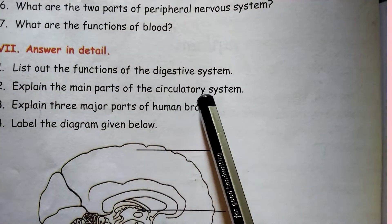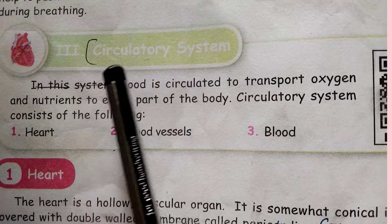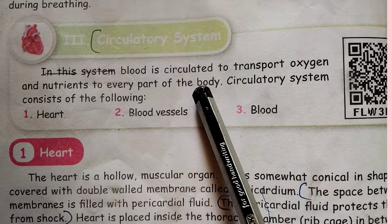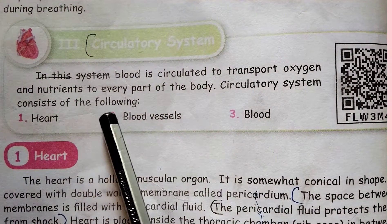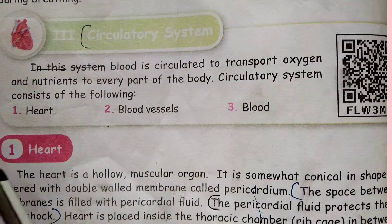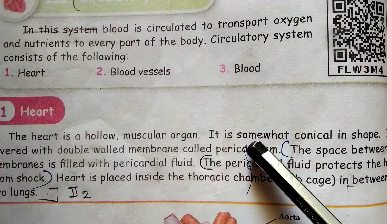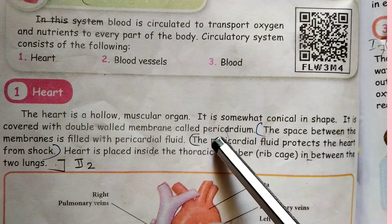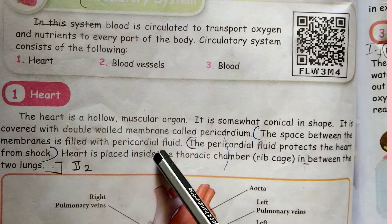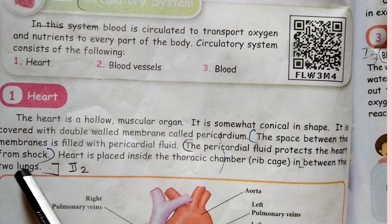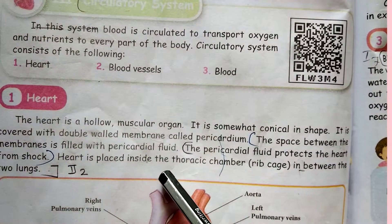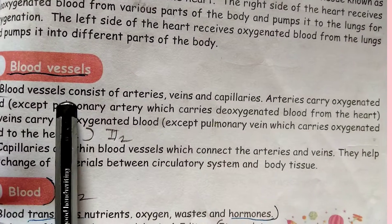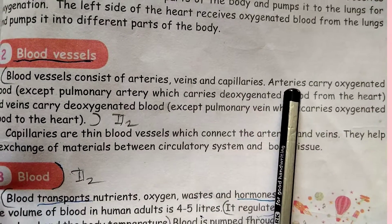Explain the main parts of the circulatory system. In the circulatory system, blood is circulated to transport oxygen and nutrients to every part of the body. The circulatory system consists of the heart, blood vessels, and blood. The heart is a hollow muscular organ of somewhat conical shape. It is covered by a double-walled membrane called the pericardium, which is filled with pericardial fluid that protects the heart from shock. Blood vessels consist of arteries, veins, and capillaries.